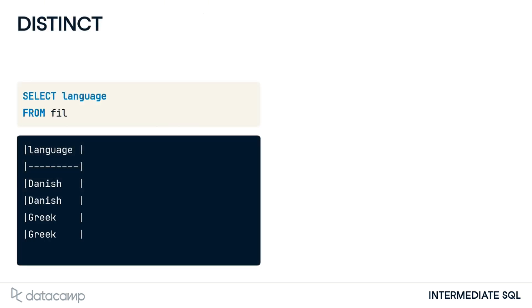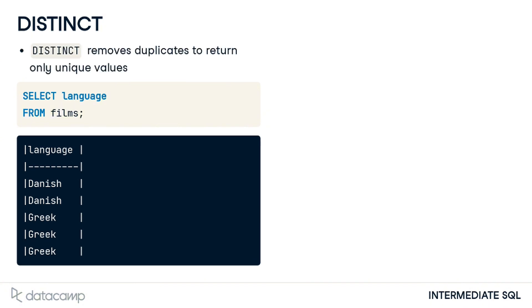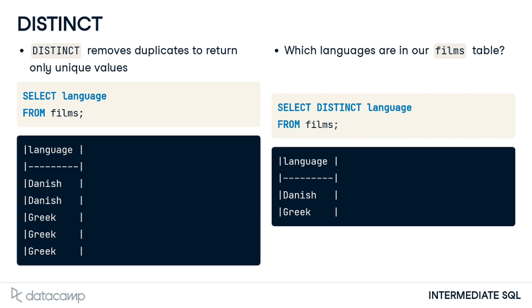Often our results will include duplicates. We can use the DISTINCT keyword to select all the unique values from a field. This might be useful if, for example, we're interested in knowing which languages are represented in the films table. Adding DISTINCT to our query will remove all duplicates, as we can see here.